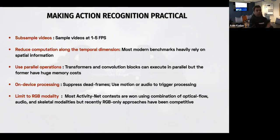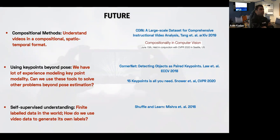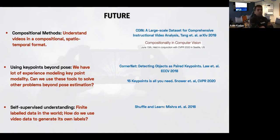In the remaining slides, let's look at the near future of these methods. First, there is a lot of emphasis on compositional methods — understanding videos in a compositional spatiotemporal format. The COIN paper requires combining actions in different ways to come up with a much higher-order understanding of the whole video. Another recent trend is to use key points — for example, instead of using key points to detect human pose, you can also use key points to perform object classification, object detection, pose tracking, or even pose-based action recognition.